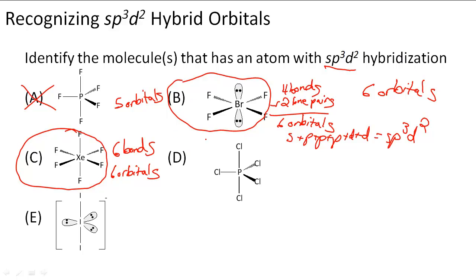D has 1, 2, 3, 4, 5 bonds and it's kind of like PF5 up here — instead of PF5, it's PCl5. So D is also out of the running because it has 5 orbitals.